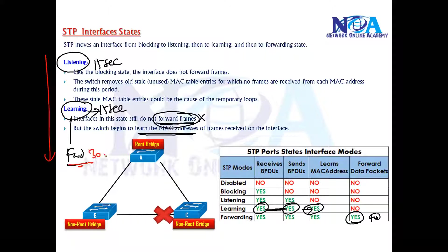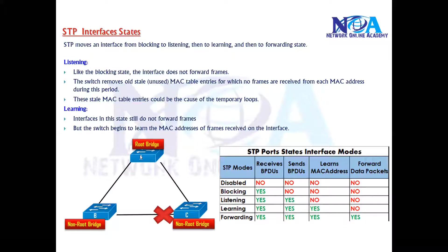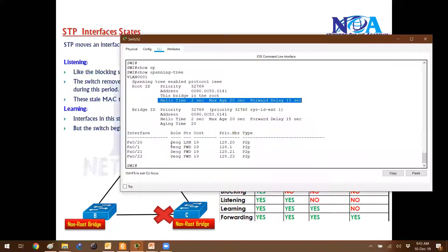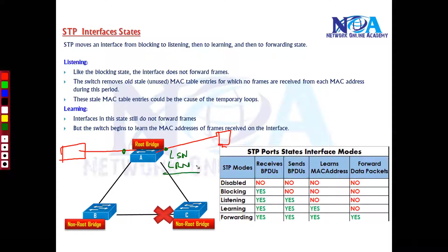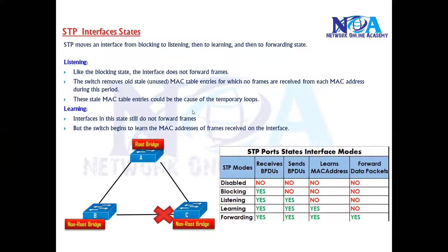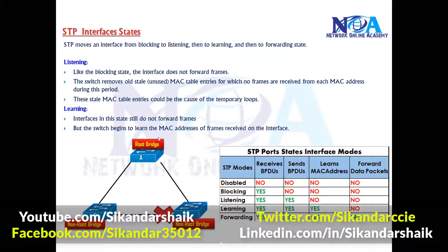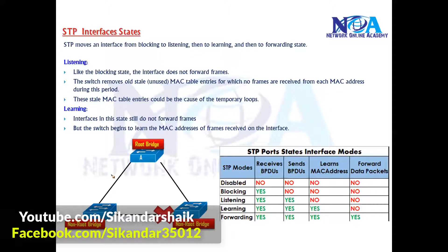This whole process normally takes 30 seconds, which is why whenever you connect a new link — like a computer or a switch — there is a delay. Every port goes through listening and learning by default, which is called the forwarding delay. Before assigning the port to forwarding state, STP has to complete the calculation process and figure out the path during this convergence period.